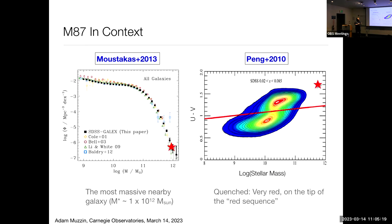If you plot M87 on the color-mass or color-magnitude diagram — another classical diagnostic we use in galaxy evolution — you see that in the local universe there's a bimodality: red galaxies that presumably don't form stars and blue galaxies that presumably do. Here's M87 way off in the corner, very massive and very red. It's on the tip of the so-called red sequence.